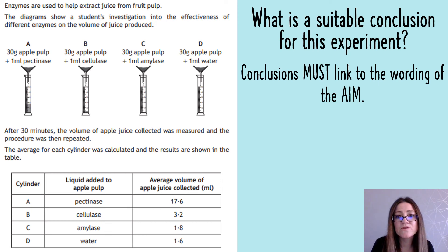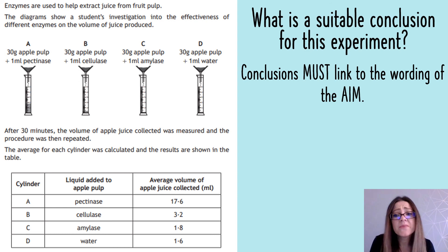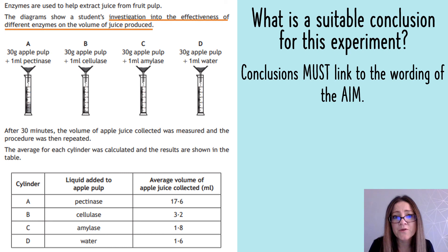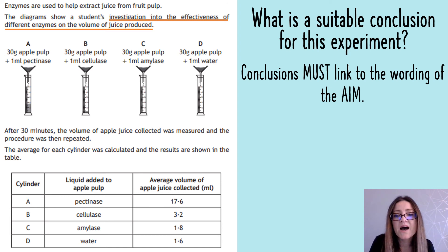The final question in any experimental question asks you to draw a suitable conclusion, and it can be a really tricky one because there's quite a lot you have to do to get the mark. Where students normally go wrong is they don't match their conclusion to the wording of the aim - and it's incredibly important that you do. Remember our aim was an investigation into the effectiveness of the different enzymes on the volume of juice produced, so your conclusion must use that wording.